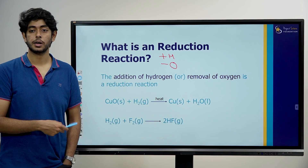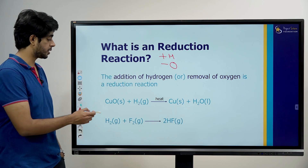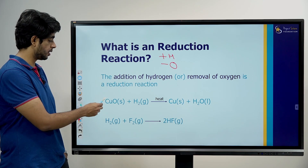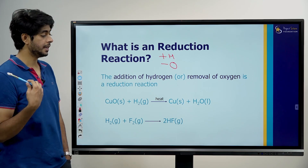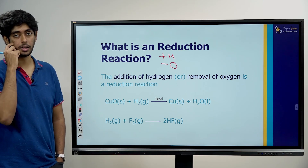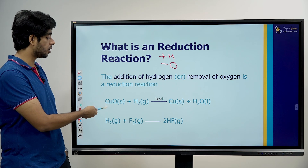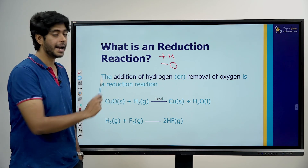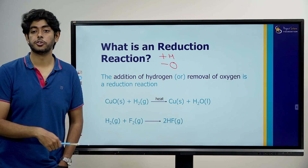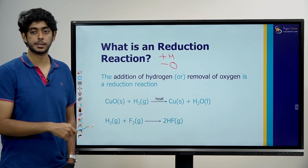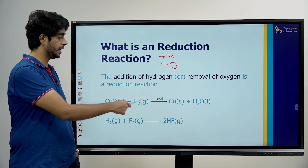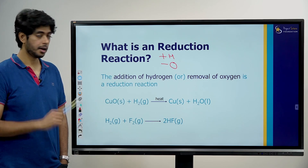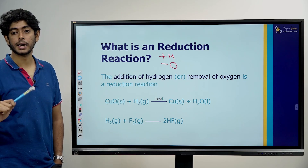For example, this is copper oxide. This is the hydrogen gas — what we call the full heat. This is the reaction — copper oxide reacting with hydrogen gas.